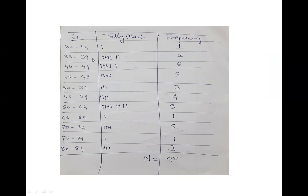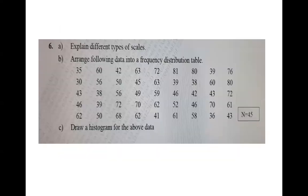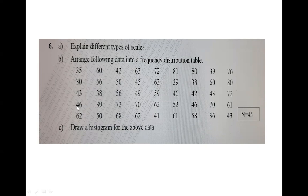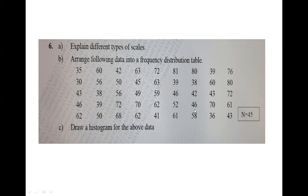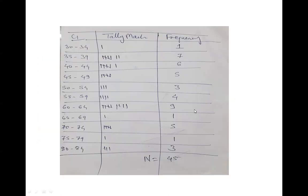You can keep a distance of two, three, five, seven, or ten - it is up to you. So I have kept a distance of five digits. Now what is the task? You have to see 30 to 34 as the class interval, so you search for all numbers from 30 to 34 in the data and make tally marks for each occurrence.